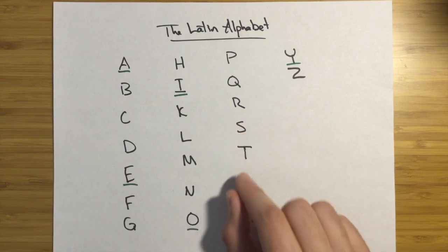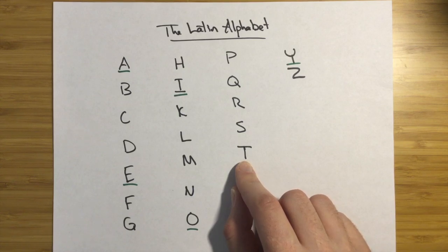S makes a S sound, as you can imagine. T makes a T sound. But in English, sometimes we turn this into a SH sound. Latin, that's not the case. It's always a T.